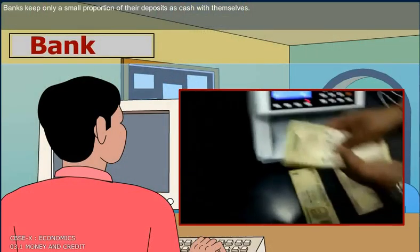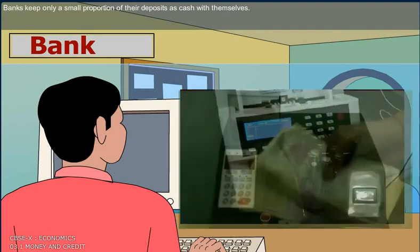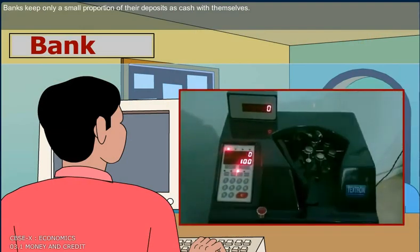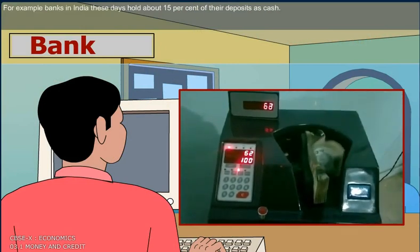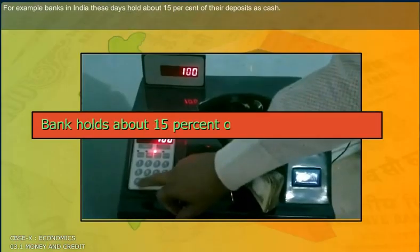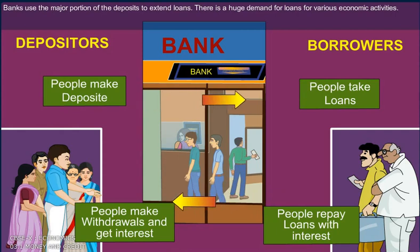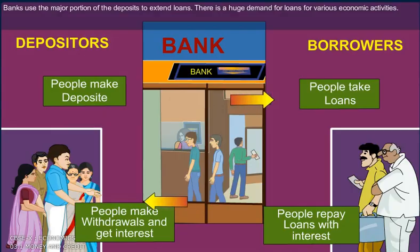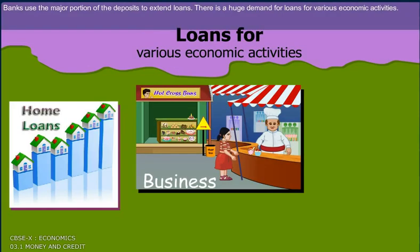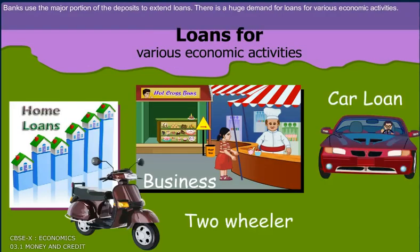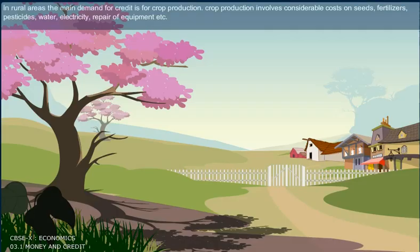Banks keep only a small proportion of their deposits as cash with themselves. For example, banks in India these days hold about 15 percent of their deposits as cash. Banks use the major portion of the deposits to extend loans. There is a huge demand for loans for various economic activities.